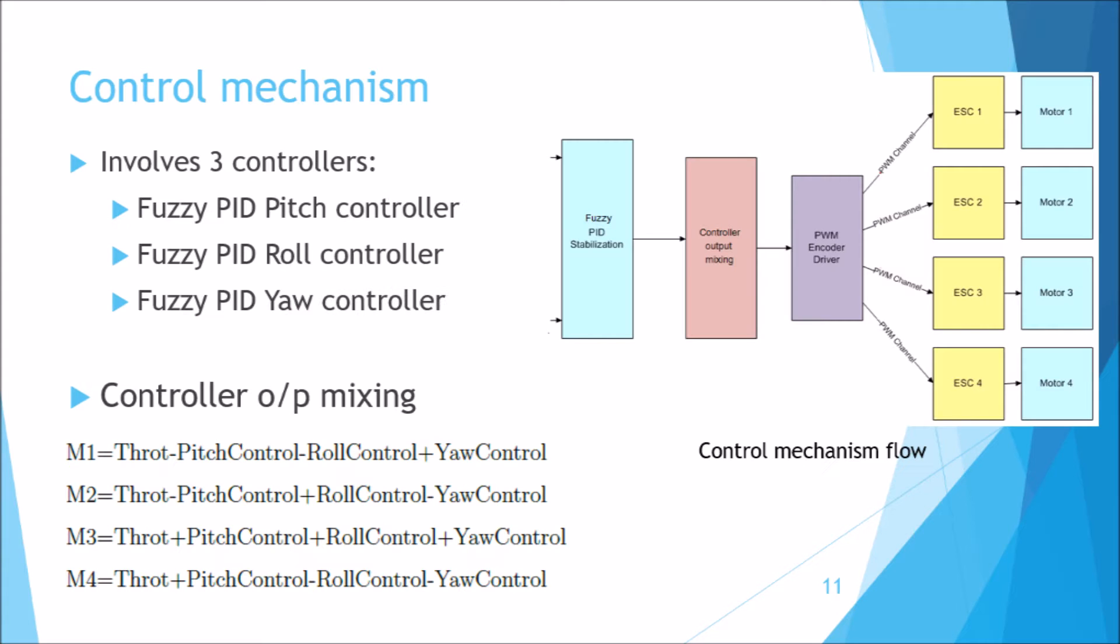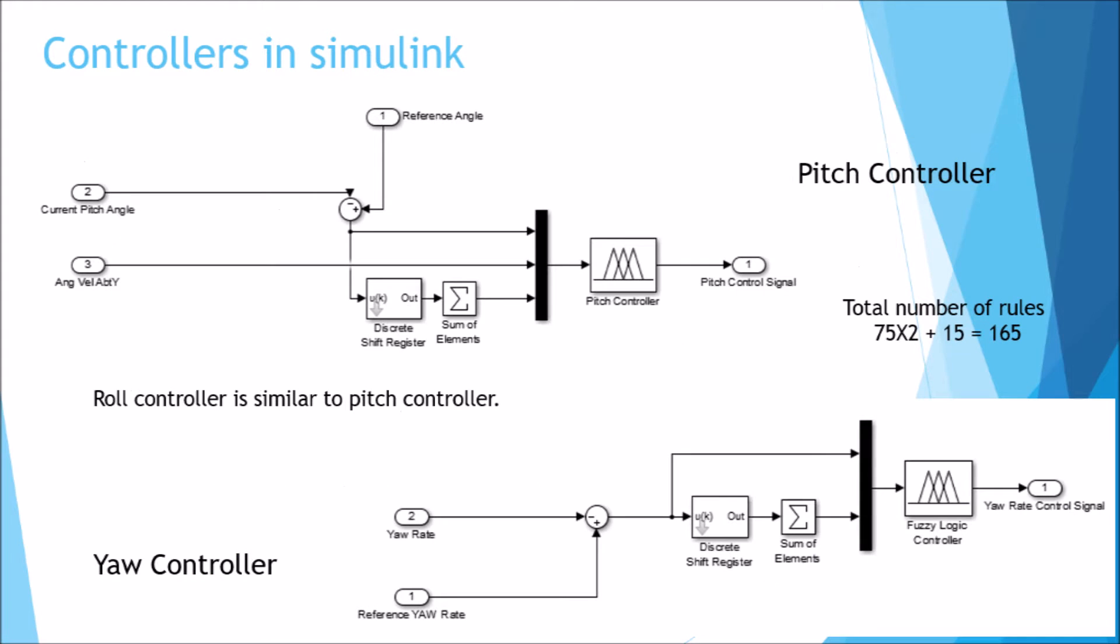The attitude control mechanism of quadcopter involves three fuzzy controllers, namely fuzzy PID pitch, roll, and yaw controllers. The output of these controllers are mixed using the expressions shown under the controller output mixing. The diagram shown represents this process using blocks.